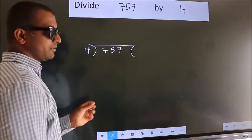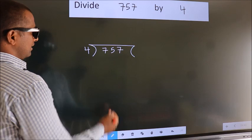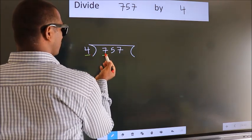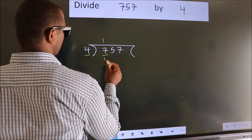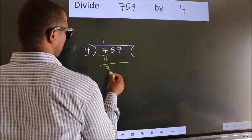This is step 1. Next, here we have 7, here 4. A number close to 7 in the 4 table is 4 once, which is 4. Now we subtract and get 3.